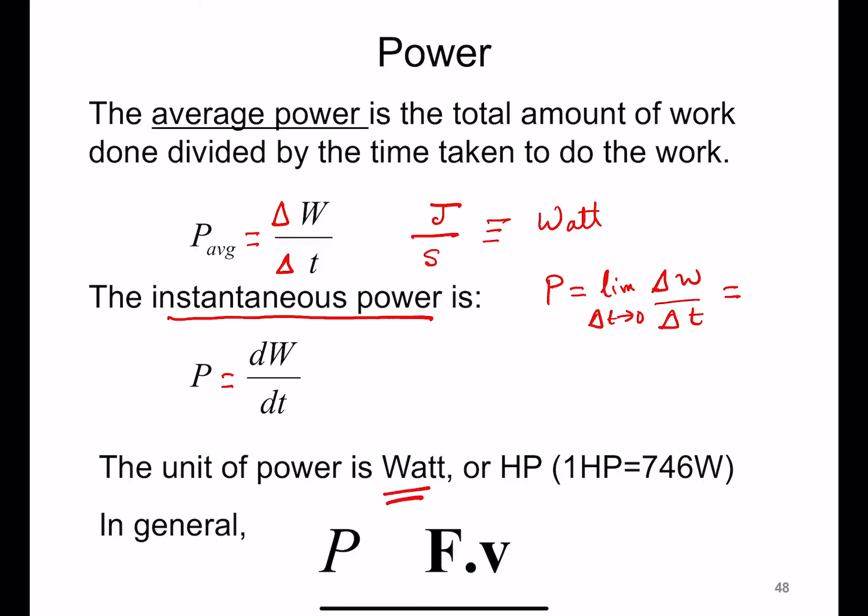Another common unit of power is the horsepower, which was a unit of power a long time ago, but it's still stuck around. One horsepower is defined as 746 watts. So that's the conversion between watts and horsepower.